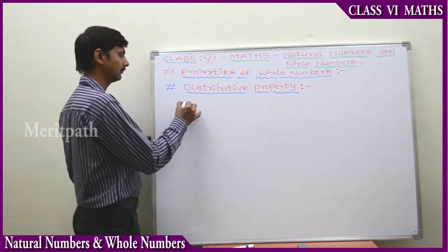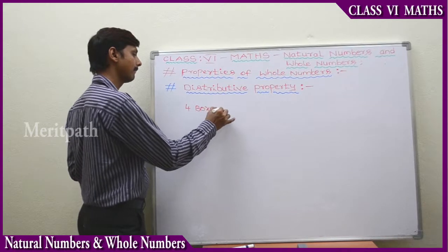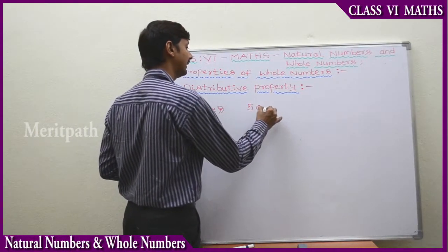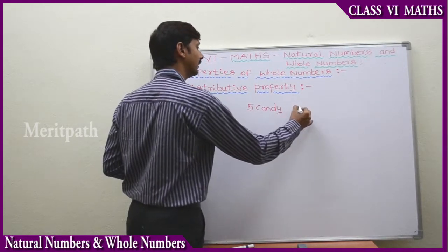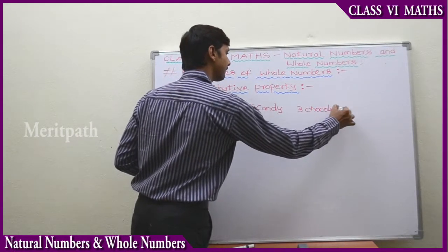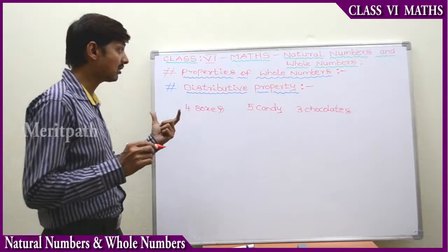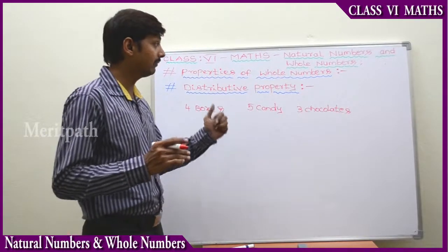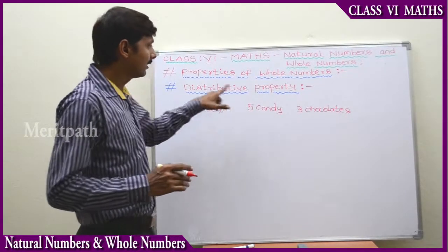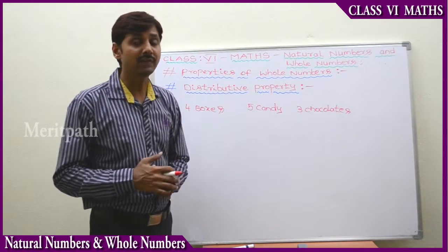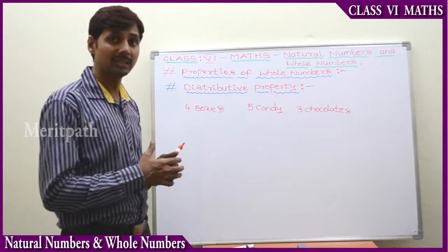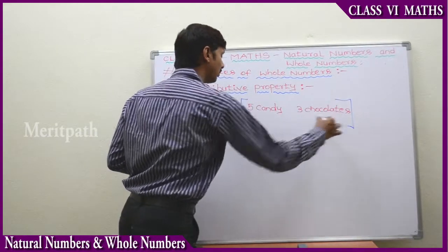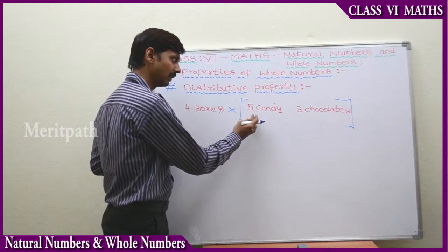Dodge has four boxes. Each box contains five candies and three chocolates. It is not that four boxes contain only five candies and three chocolates in total — each box contains five candies and three chocolates. So we need to find out the total number of candies and chocolates. We use the distributive property. All four boxes contain five candies and three chocolates.